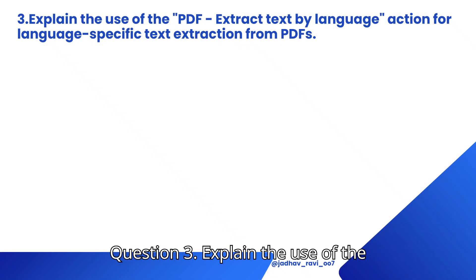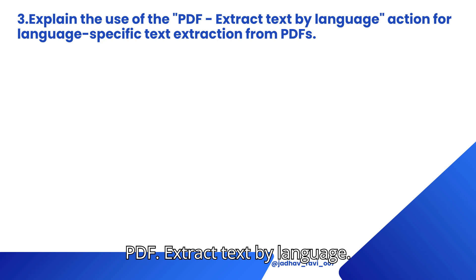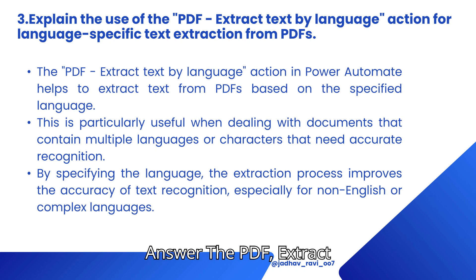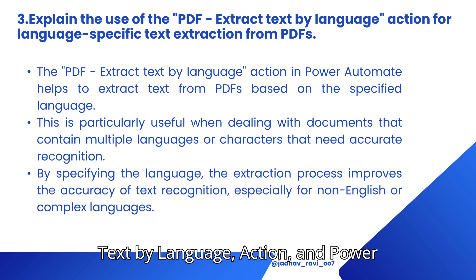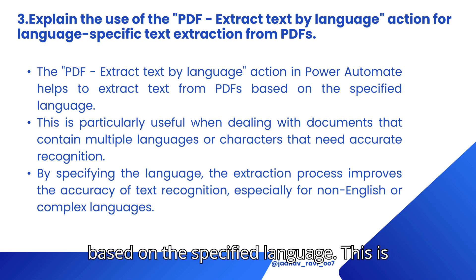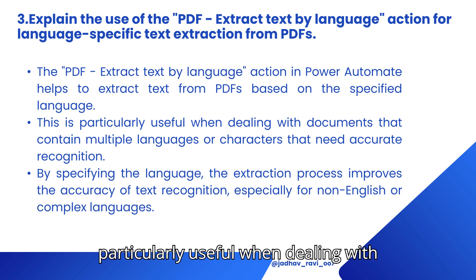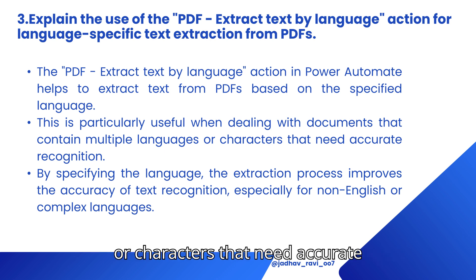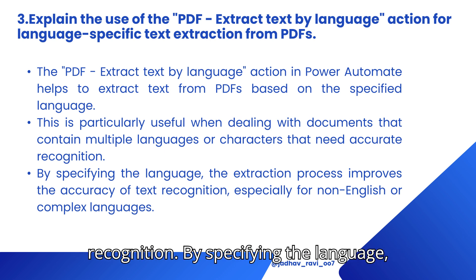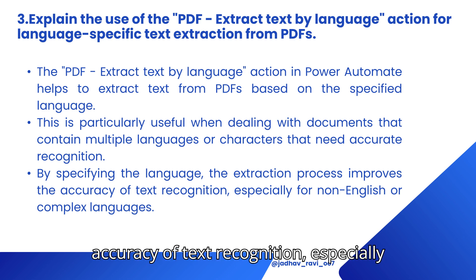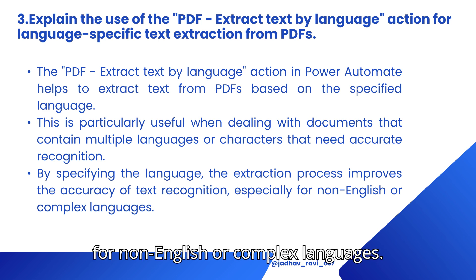Question 3: Explain the use of the PDF Extract Text by Language Action for language-specific text extraction from PDFs. The PDF Extract Text by Language Action in Power Automate helps to extract text from PDFs based on the specified language. This is particularly useful when dealing with documents that contain multiple languages or characters that need accurate recognition. By specifying the language, the extraction process improves the accuracy of text recognition, especially for non-English or complex languages.